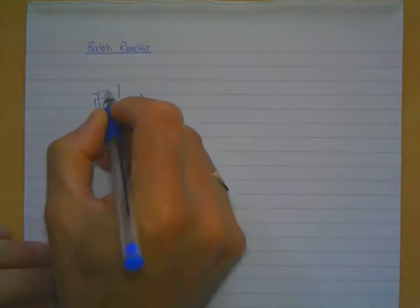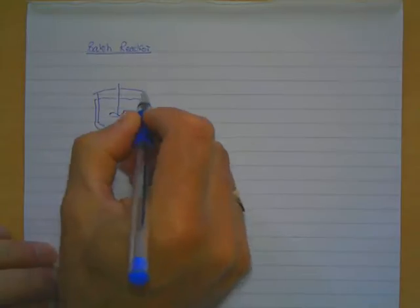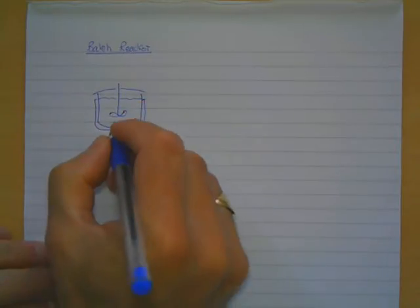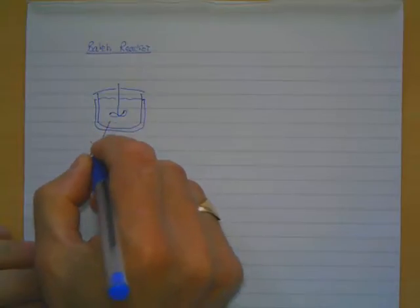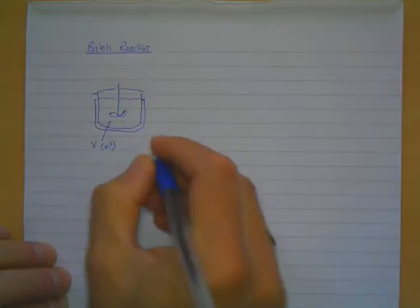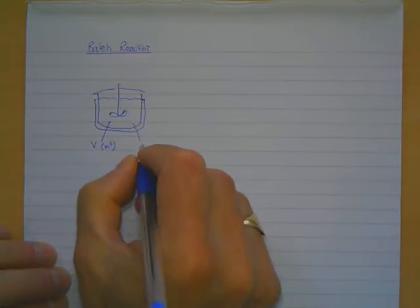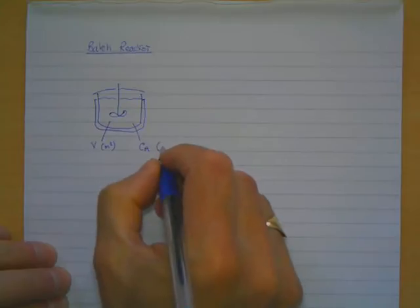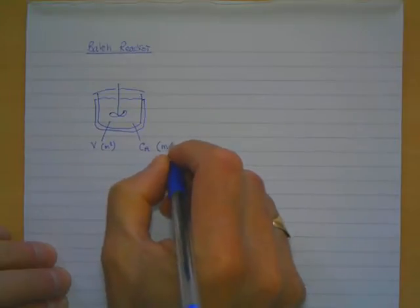Usually it has a jacket to provide heat transfer. In this case we're going to describe it as having volume V in cubic meters and we're going to think about a composition of a starting material A whose concentration is CA in moles per cubic meter.